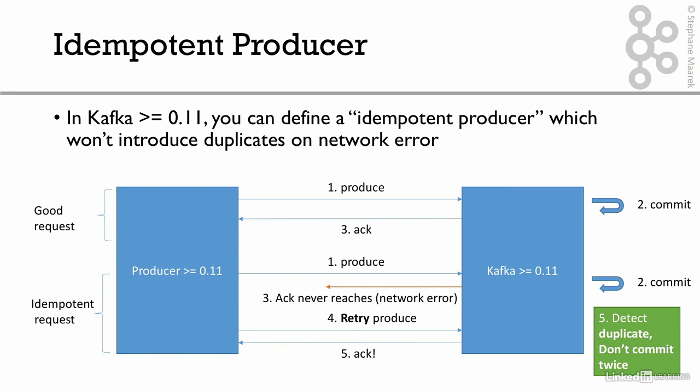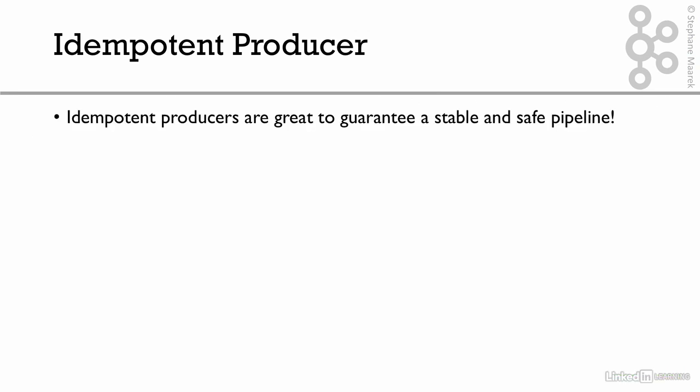This is not something you have to implement yourself — it's a built-in mechanism. Idempotent producers are great and they're not a big overhead at all. If you want a stable and safe pipeline, use them.